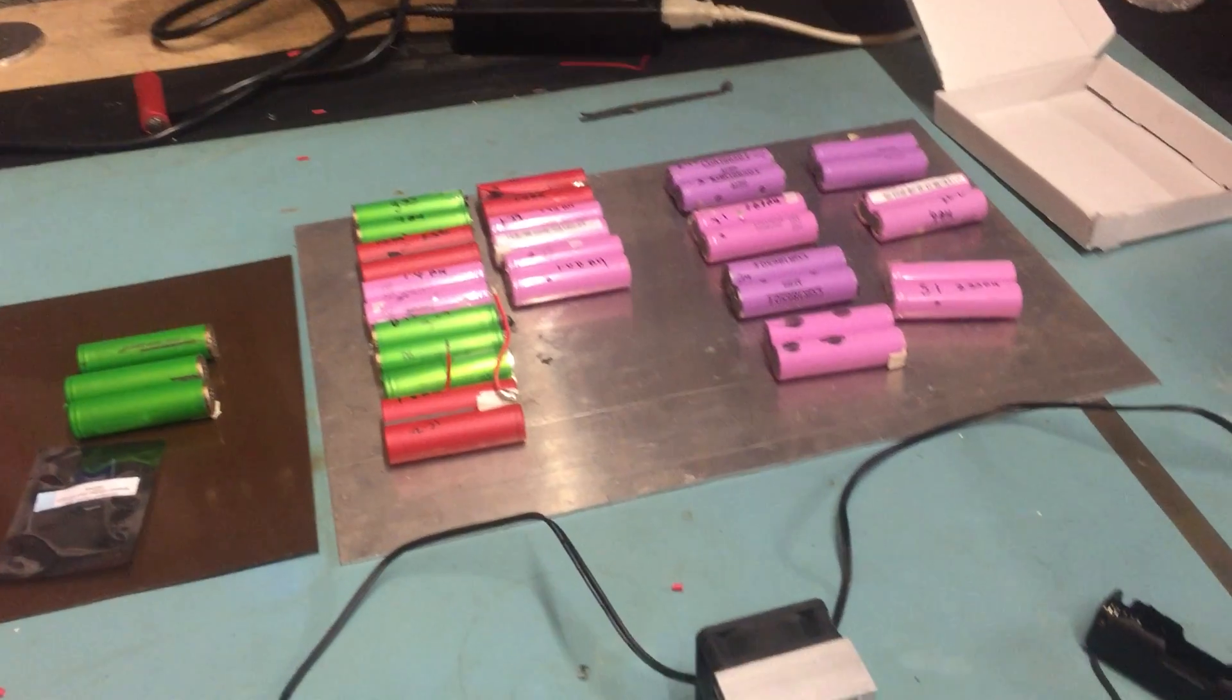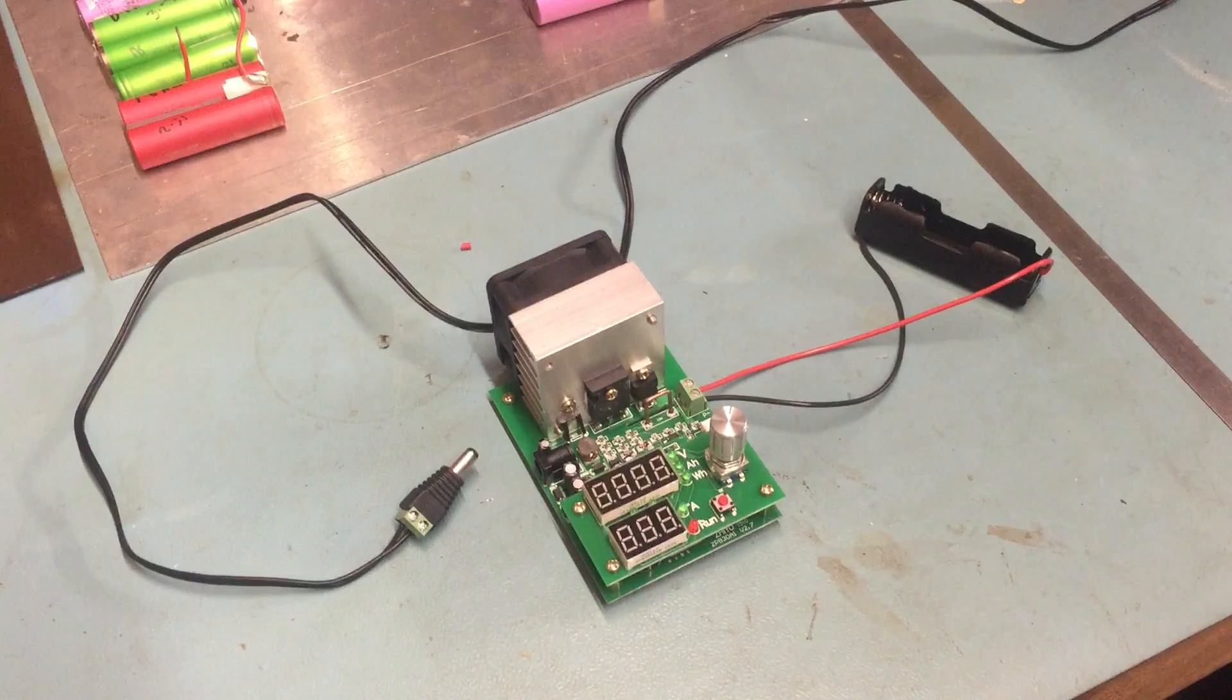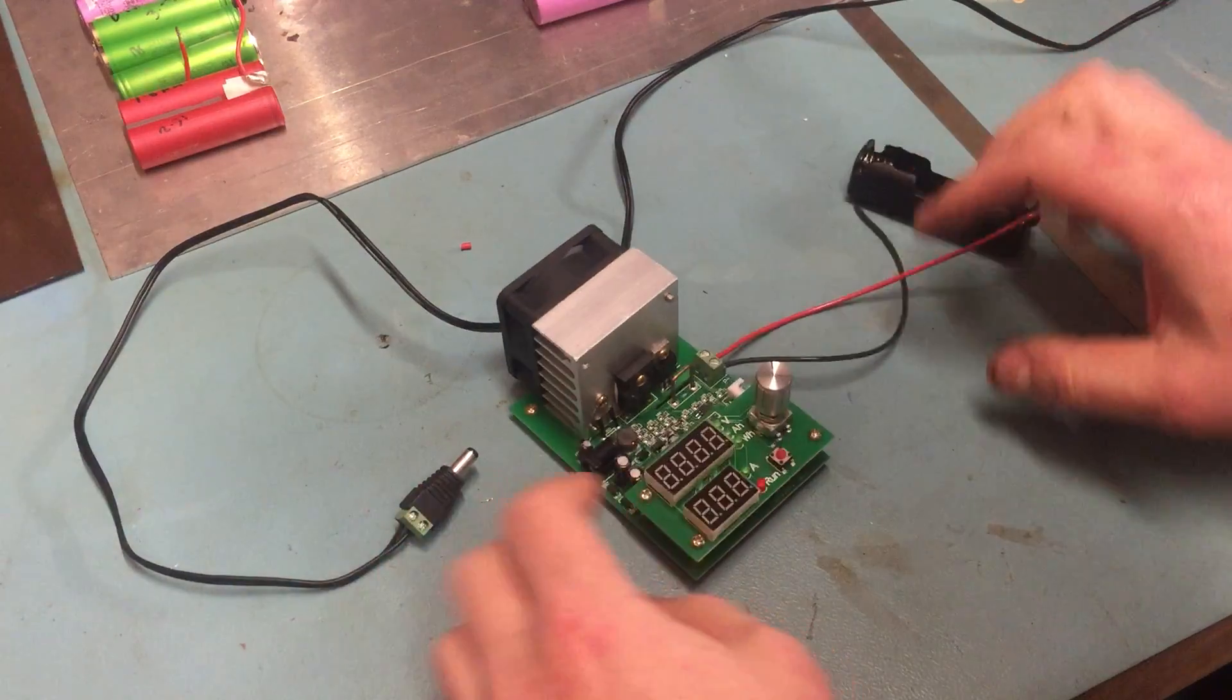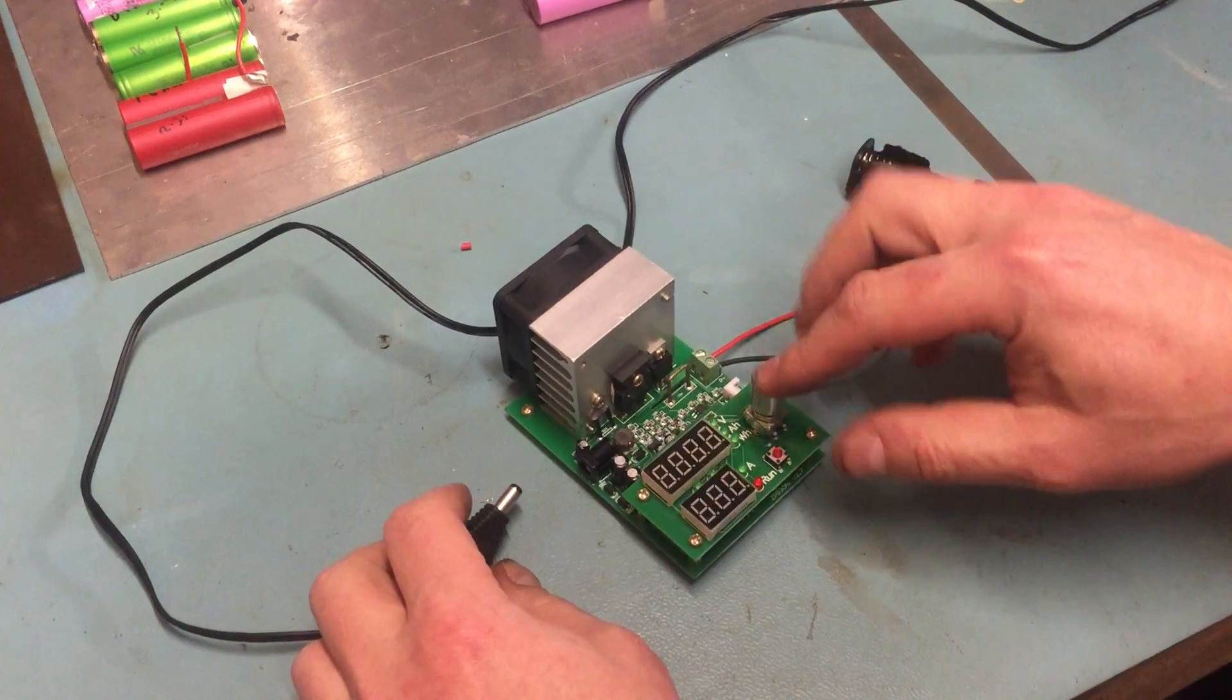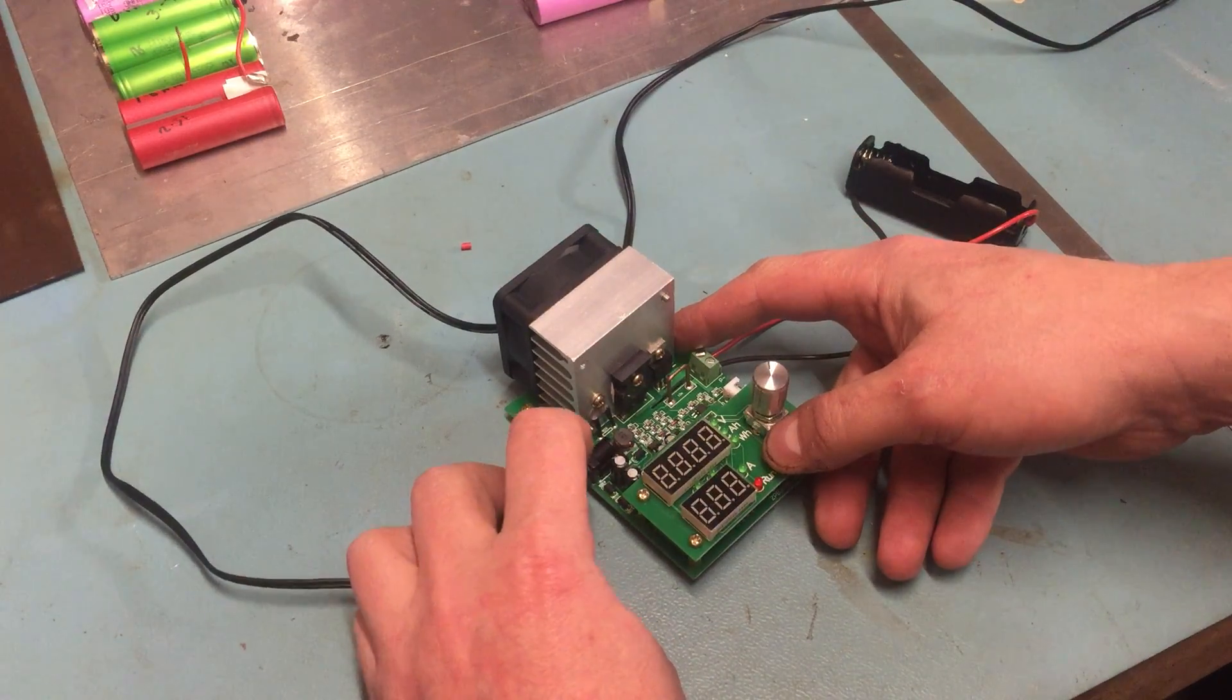So this is the actual tester itself. There are videos on eBay for it but they're all in Chinese. You press this, you power it up and hold the run button to set what mode you want to do.